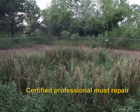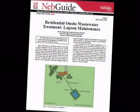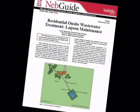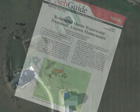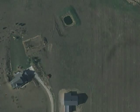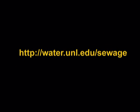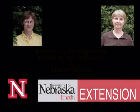In summary, a properly designed, installed, and maintained residential lagoon system should treat wastewater to minimize the impact on groundwater, surface water, and human health. Proper monthly maintenance includes checking and repairing the lagoon structure, managing vegetation in and around the lagoon, monitoring water color, and managing the water level. If you have questions about your lagoon, visit water.unl.edu/sewage. We have publications on lagoons, as well as a link to the Nebraska Department of Environmental Quality's list of certified on-site wastewater treatment professionals.